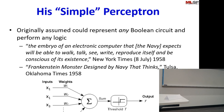Rosenblatt was hyper excited, and even more excited were all the newspapers of the time, which said things like 'the embryo of an electronic computer that the Navy expects will be able to walk, talk, see, write, reproduce itself, and be conscious of its existence' — New York Times, 1958. And 'Frankenstein monster designed by the Navy that thinks' — Tulsa Oklahoma Times, 1958.